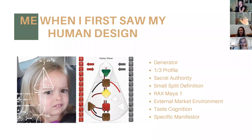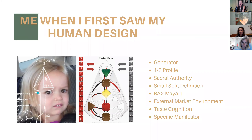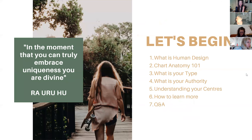I've got a split definition. I've got an incarnation cross called the Right Angle Cross of Maya. I've got an external market environment, a taste cognition, and I'm a specific manifestor — lots of fun things. Honestly, I didn't even know what the red and the black meant when I first started. If I've been able to come from 'why is it red and why is it black' to being able to teach you what I know, then you're in good hands.